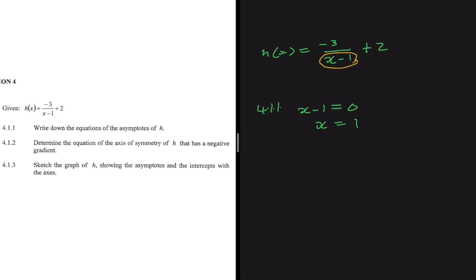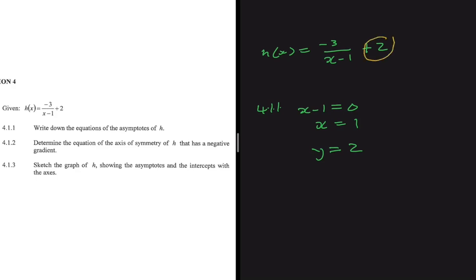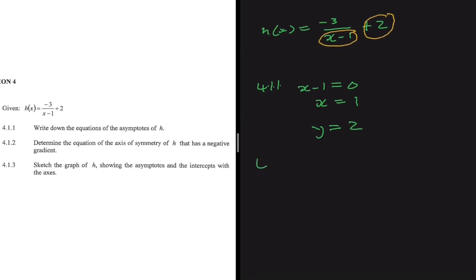Now we need to find the horizontal asymptote. For y to equal 2, the fraction part would need to equal zero, but since that part can never equal zero, y can never be 2. That tells us the horizontal asymptote is y = 2. In a hyperbola, this constant term is always the horizontal asymptote, and to find the vertical asymptote you equate the denominator to zero.